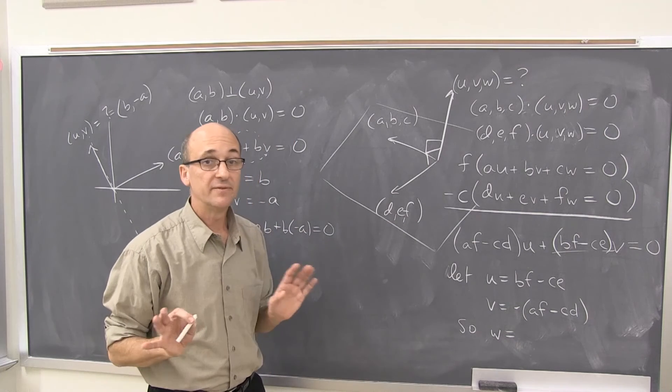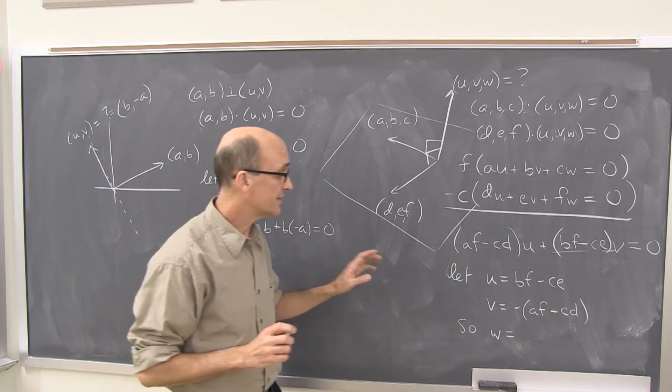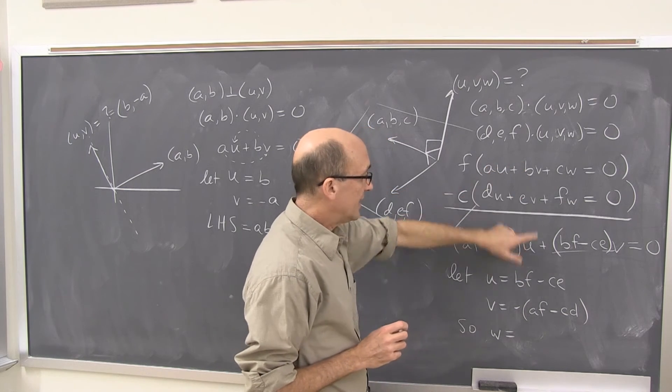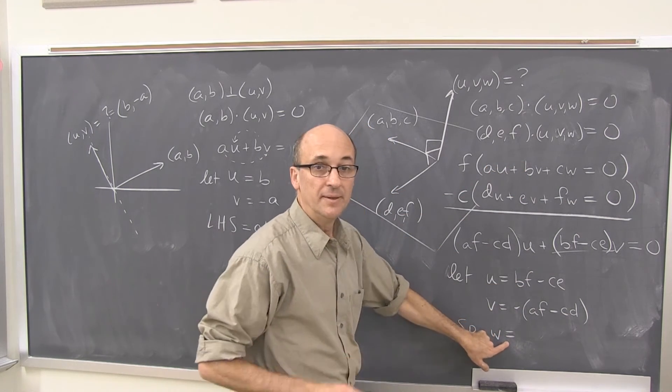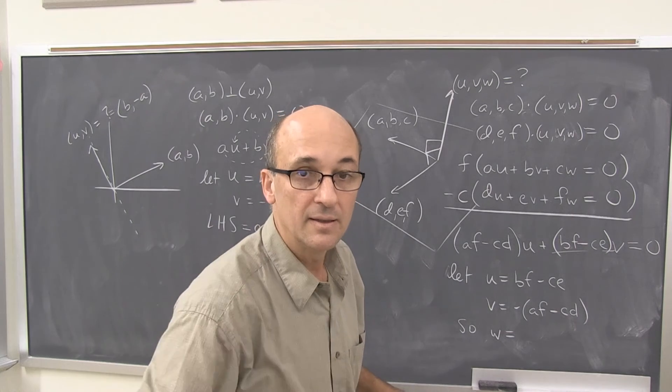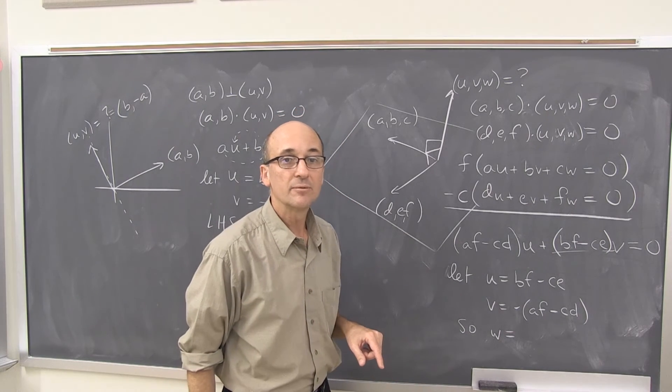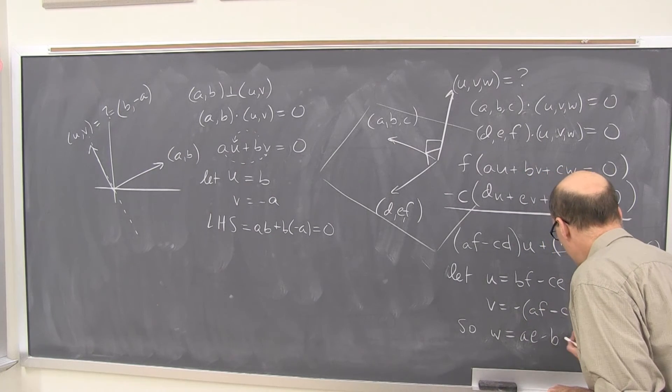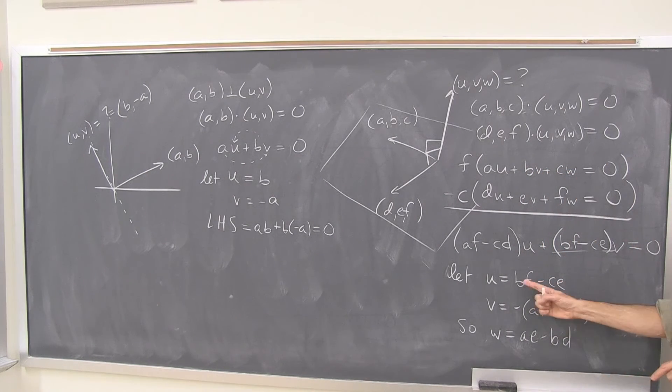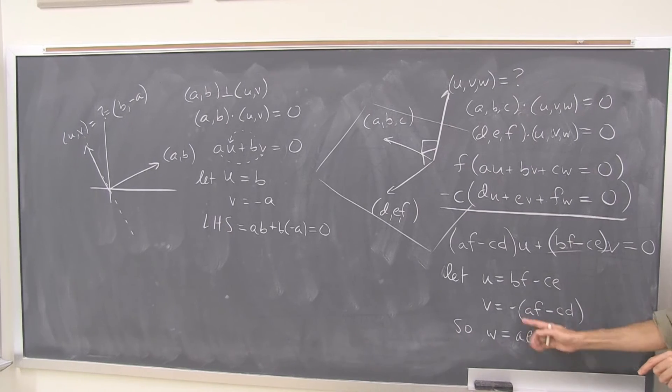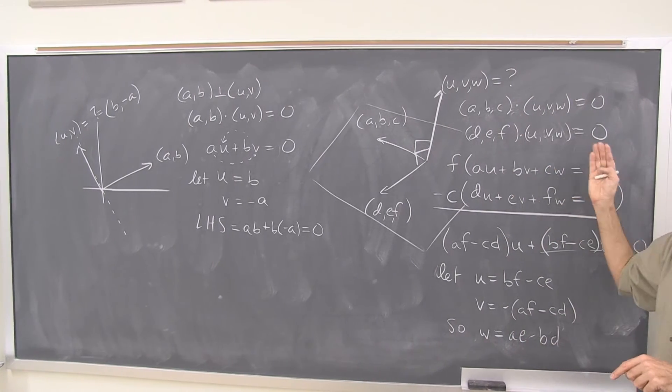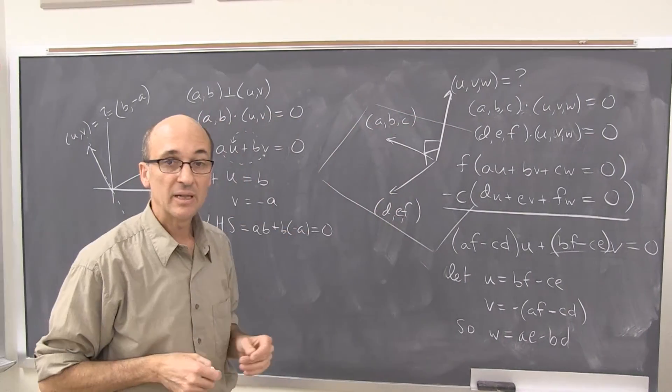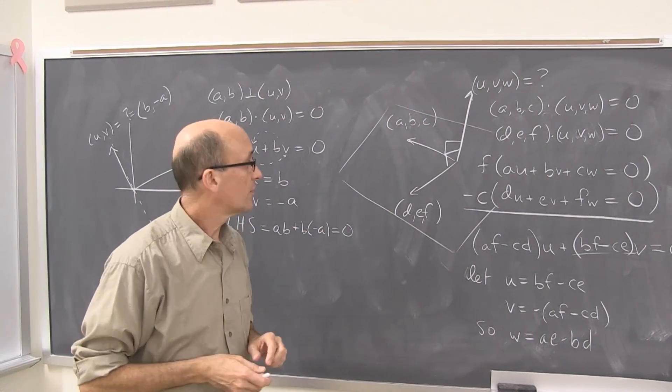Now you only need to know what is w. I won't do this algebra. But it's very, very easy. No mysteries. Nothing hard. You substitute these back in to either equation and you can solve for w. And w is equal to ae - bd. There's a solution: u and v and w. This is going to work. You can check. Put them back in the original equations. We've got a vector that's perpendicular to both. That is the cross product.